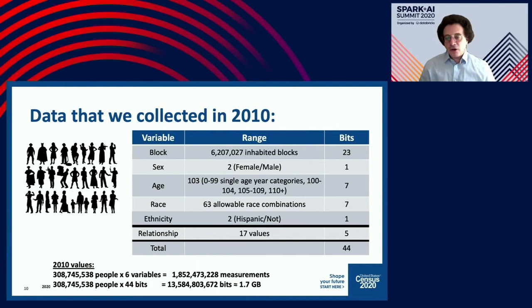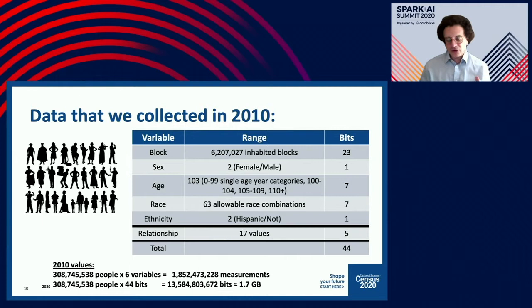For the 2010 census, we collected data on 308,745,538 people in the United States. For each one we collected where they lived, the household they were in, their sex, age, race, ethnicity, and their relationship to the householder — whether they were the householder, the householder's spouse, child, parent, or an unrelated person. It comes to about 44 bits of data per person, so the entire 2010 census raw confidential data is 1.7 gigabytes, which is essentially six integers per person.